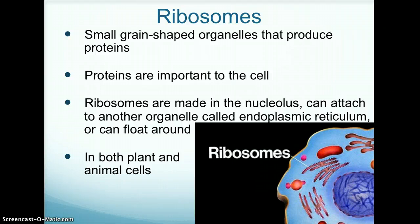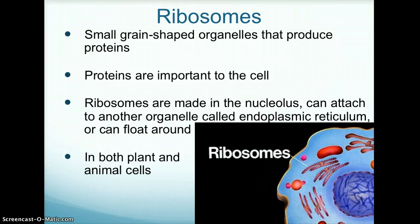Ribosomes are organelles in both plant and animal cells. They are small, grain-shaped organelles that produce proteins important to the cell. Ribosomes are made in the nucleolus and can attach to another organelle called the endoplasmic reticulum, or they can float around the cell.